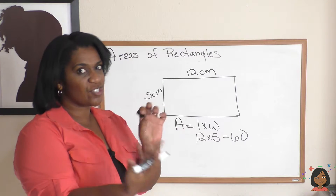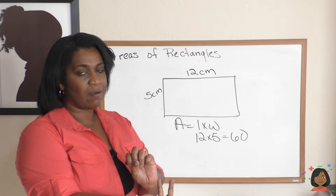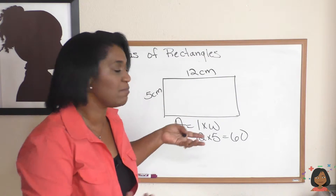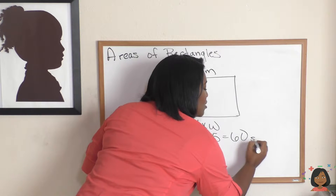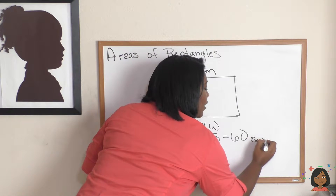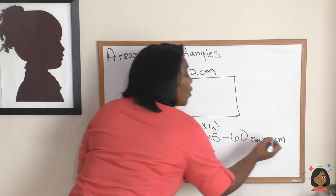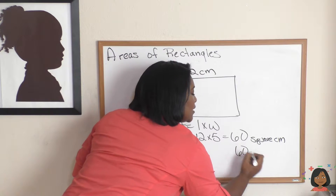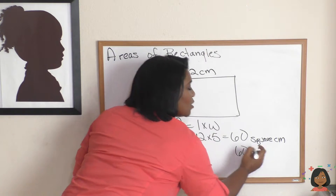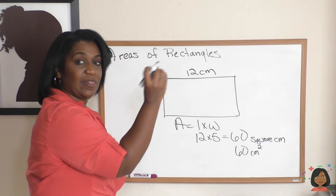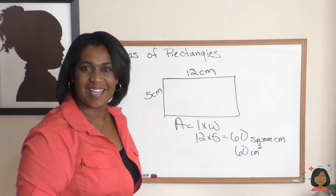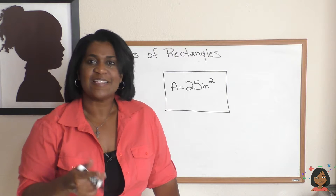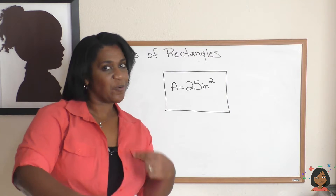Remember, it always has to have a label of 'square,' and this time our unit isn't just 'unit' — they gave us centimeters. So the answer is sixty square centimeters. Another way you can write it is sixty centimeters with a little two up in the corner. You can also use area to go backwards and find the length of a side of a square.